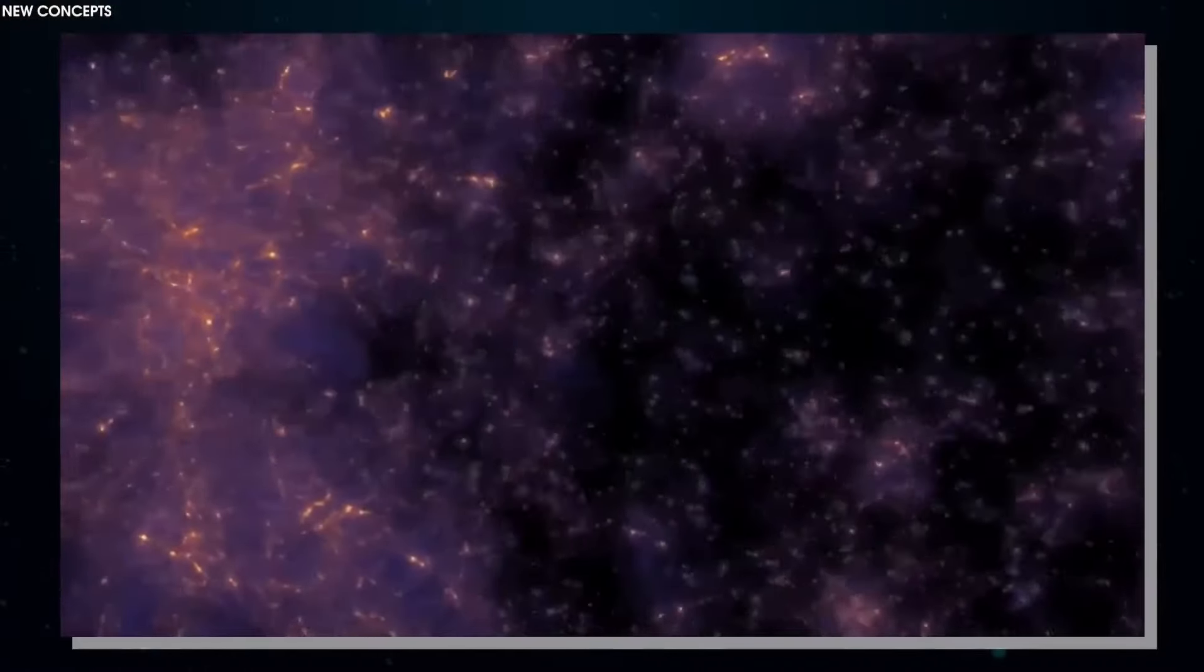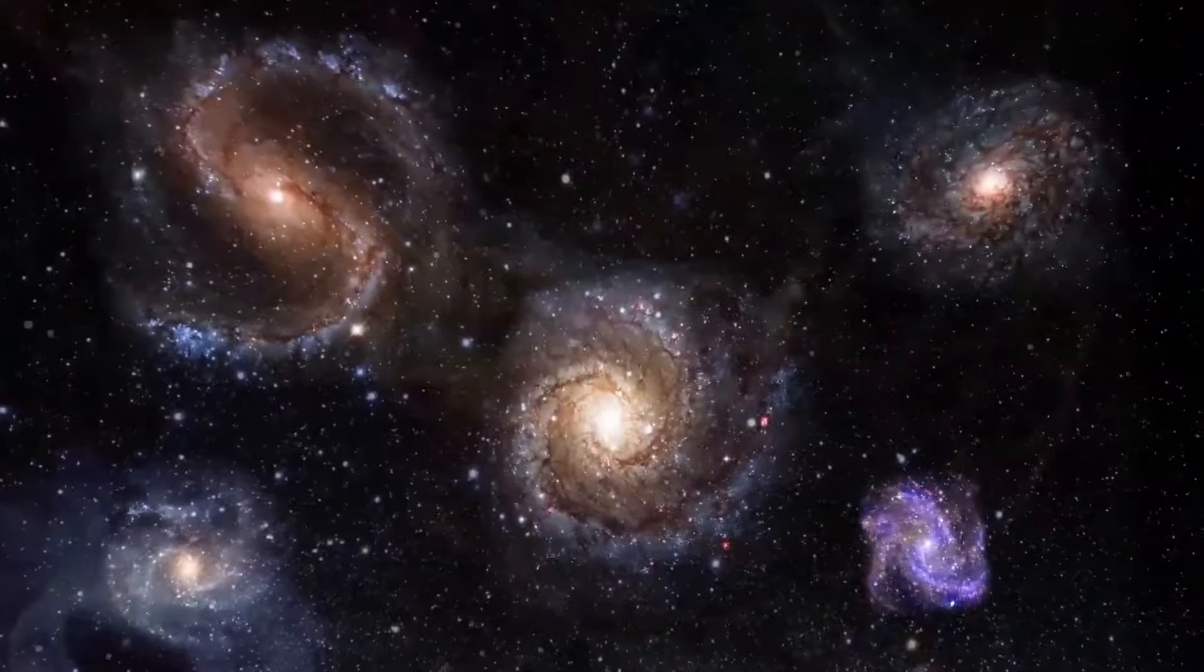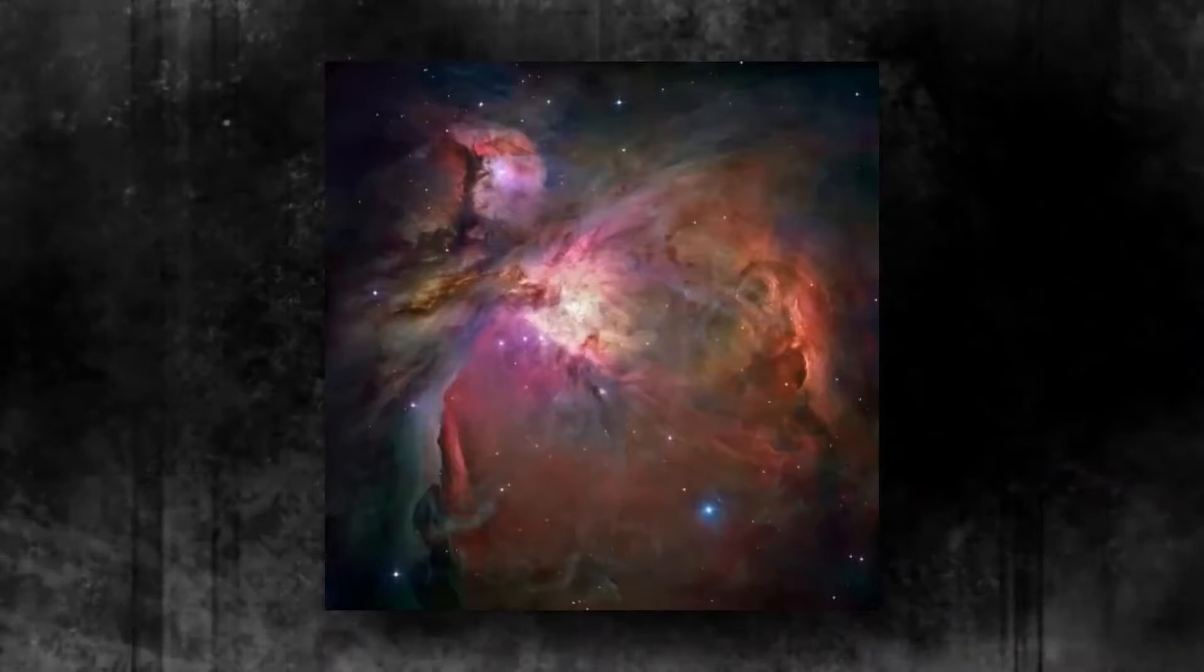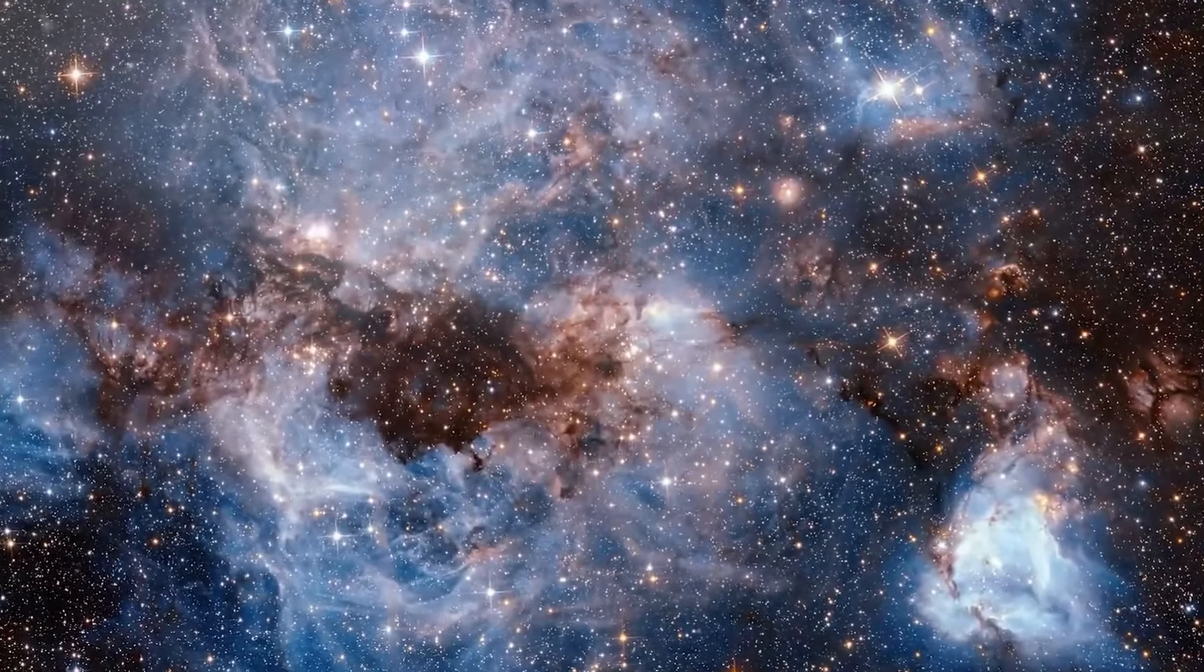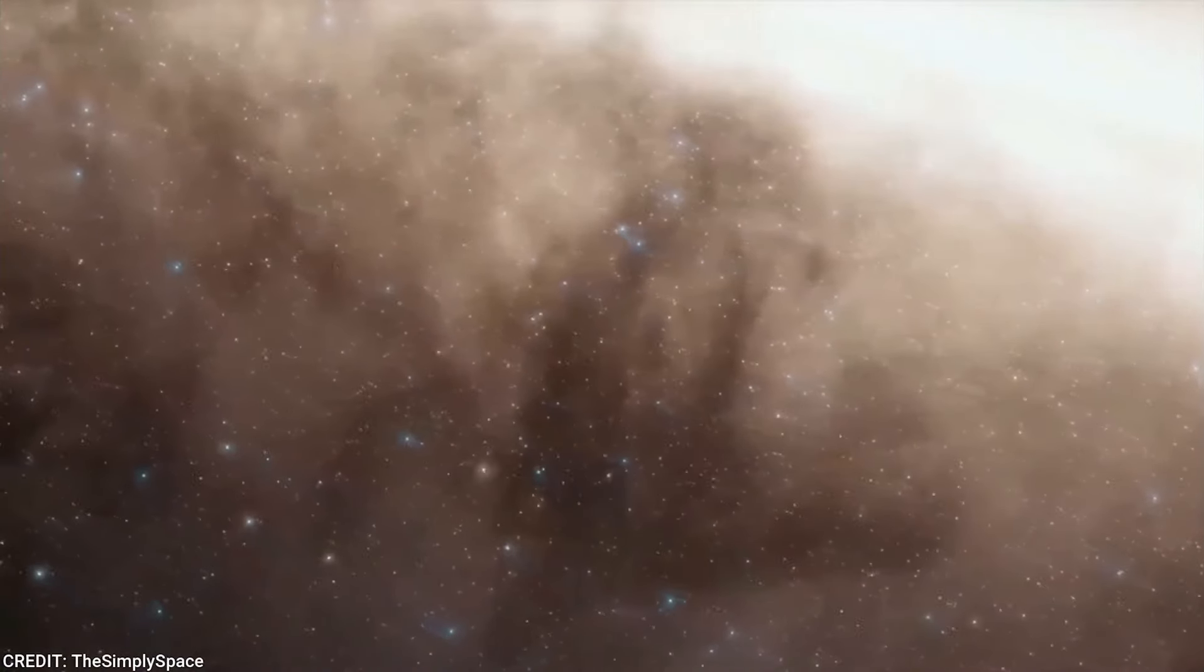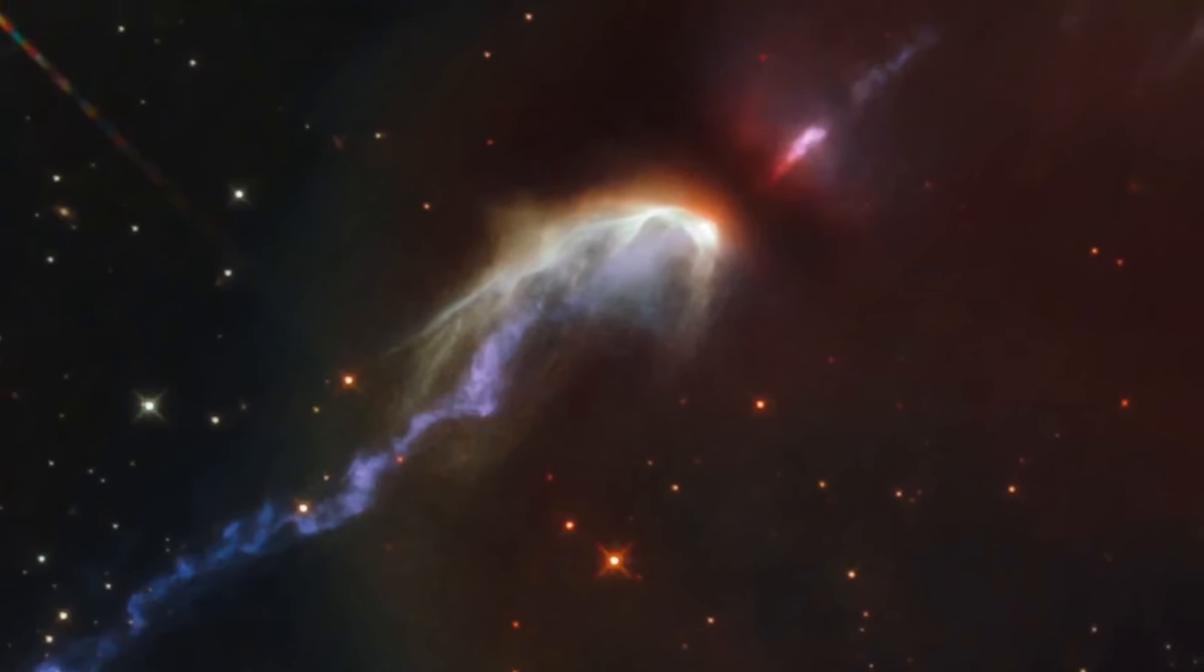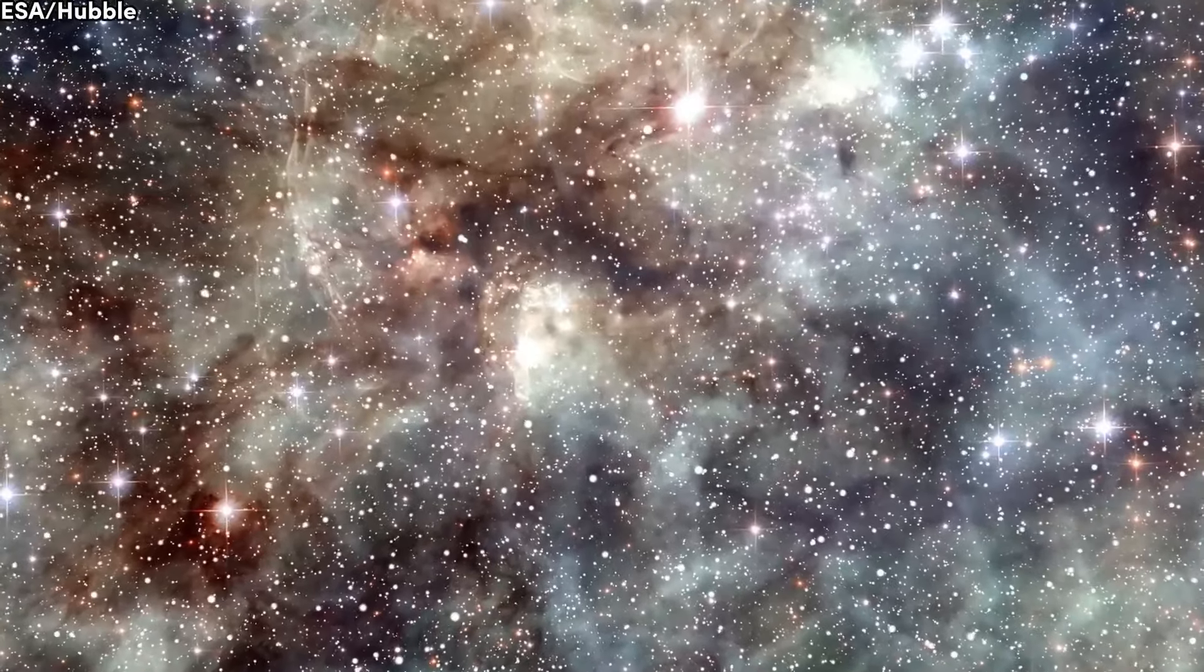But first and foremost, we need to understand what cosmologists know or think they know about the universe. After the Big Bang, the infant universe began cooling off. Within a few million years, the roiling plasma that filled space settled down, and electrons, protons, and neutrons combined into atoms, mostly neutral hydrogen. Things were quiet and dark for a period of uncertain duration known as the cosmic dark ages.